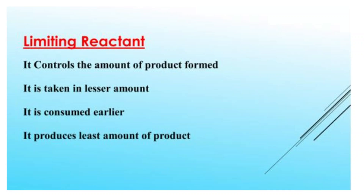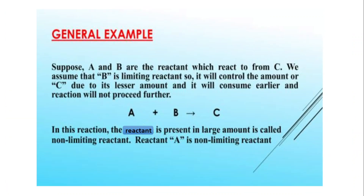Simplify karte hain kuch bullet points mein: it controls the amount of the product; it is taken in a lesser amount; it is consumed earlier; and it produces the least amount of product. Matlab yeh wo reactant hai jis ki wajah se reaction stop ho jaata hai aur aapke paas product kum banta hai. Ek general example lete hain: agar aapke paas do reactants A aur B hain jo react karke product C banate hain, lekin is case mein A aur B stoichiometric amounts mein nahi liye gaye.